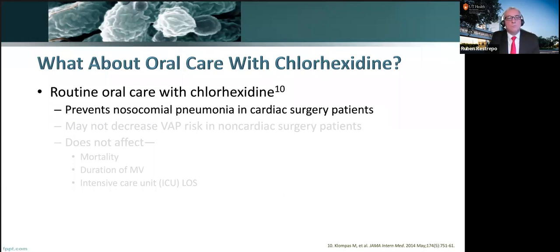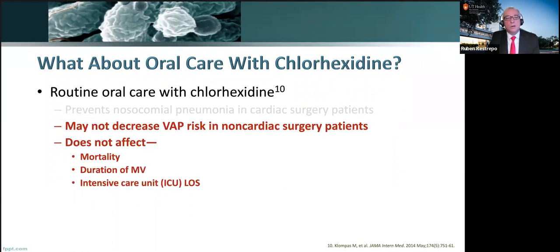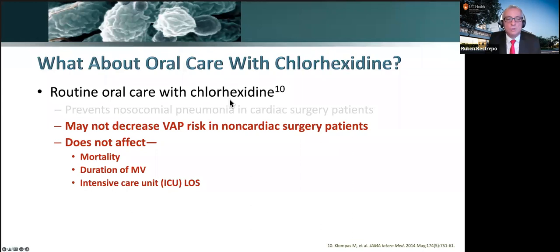Oral care with chlorhexidine shows exactly the evolution of these strategies. Routine oral care with chlorhexidine prevents nosocomial pneumonia in cardiac surgery patients. But if you are in a non-cardiac unit, you may not decrease VAP — and in fact, it may go the other way. It doesn't affect mortality, duration of mechanical ventilation, or ICU length of stay. The issue now relates to the amount of pooling of secretions from the biofilm, which has been associated with more VAP.